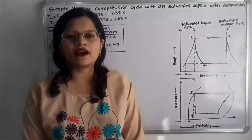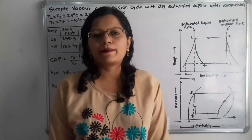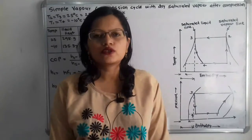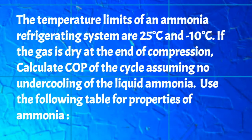Hello friends, this is Priyanka. Today we are going to solve a problem on vapor compression cycle with dry saturated vapor after compression. The problem states: the temperature limits of an ammonia refrigerating system are 25 degrees Celsius and minus 10 degrees Celsius. If the gas is dry at the end of compression, calculate the coefficient of performance of the cycle, assuming no under-cooling of the liquid ammonia.